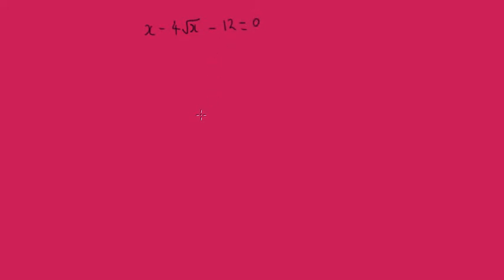Now we're going to play the same trick. This time we're going to say y equals the square root of x. So x would then become y squared, because if we look here, y squared is going to equal x. So we're going to have y squared minus 4y minus 12 equals 0.